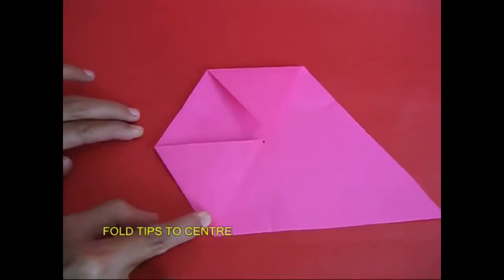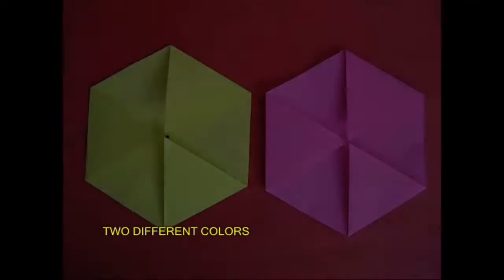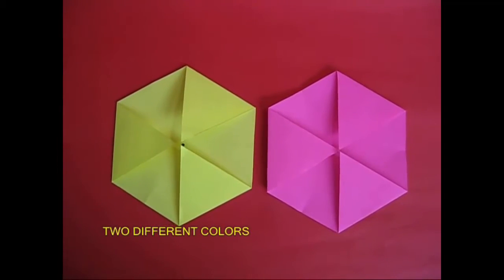You see all the three steps. It looks like a hexagonal shape. Now the two are different. You see it with a lot of colors. One is green and another is pink.